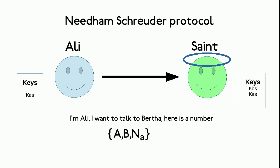Ali approaches The Saint, typically over the network, and provides a plain text message. In the plain text he indicates who he is and that he wants to communicate with Bertha. He also provides a unique number, also known as a nonce. The nonce is important to prove freshness; more on freshness later.